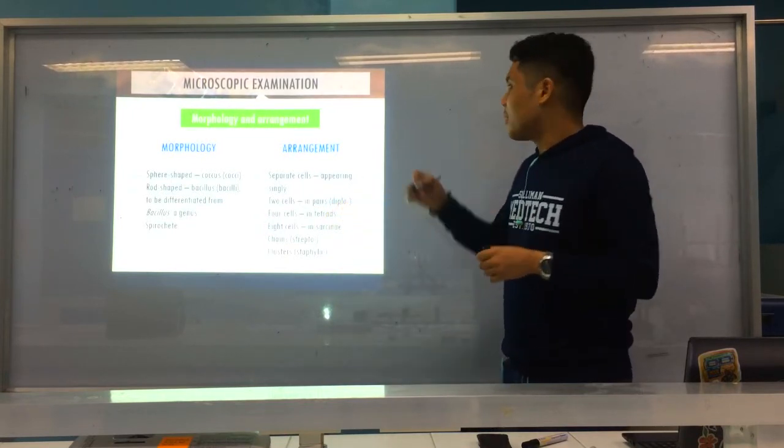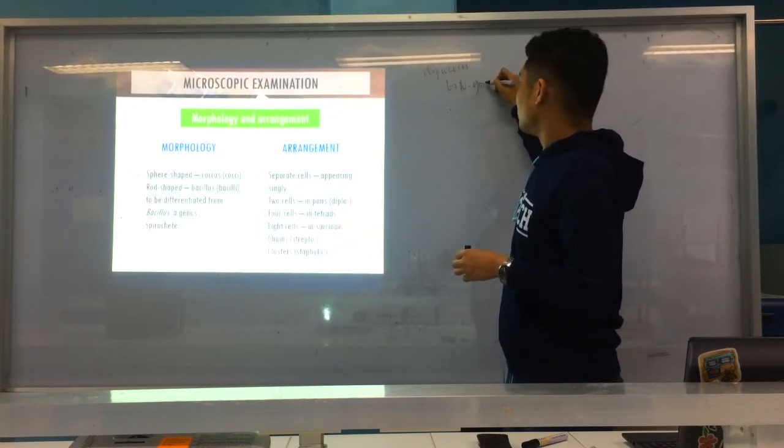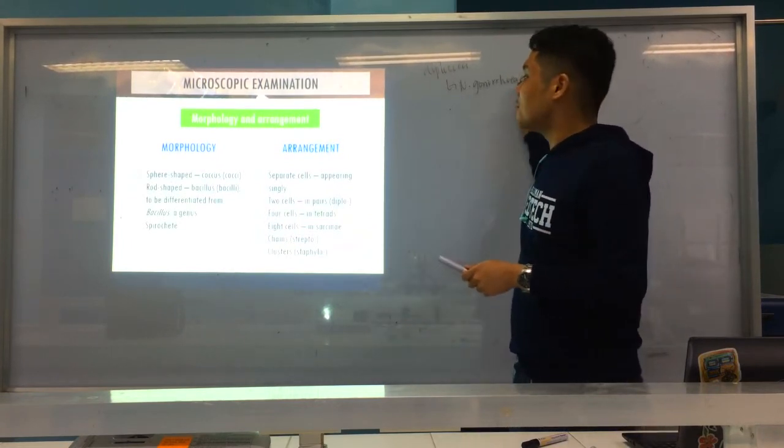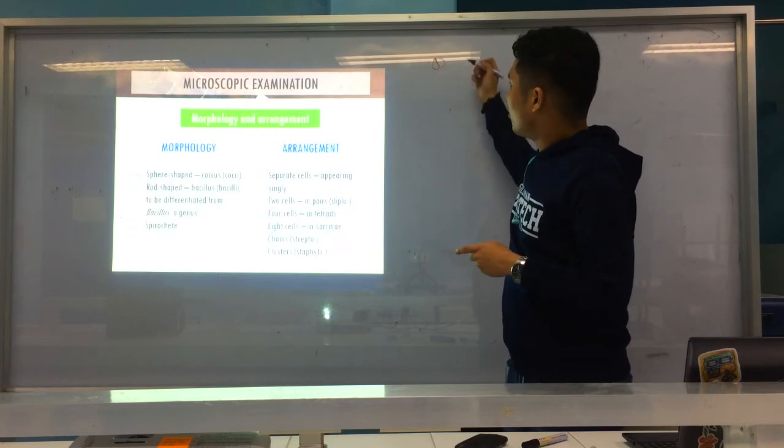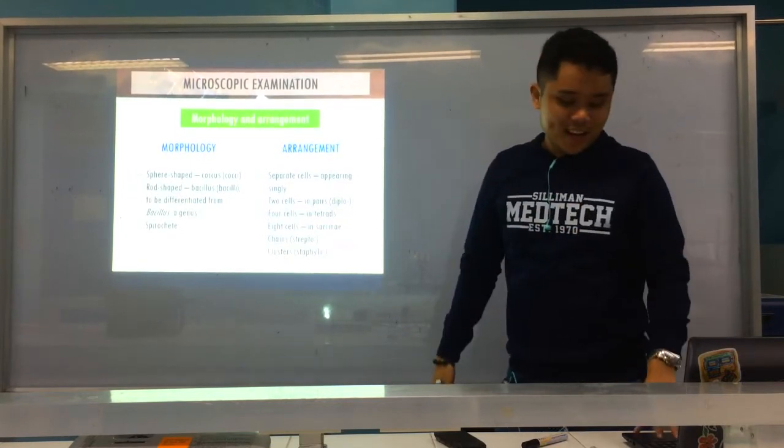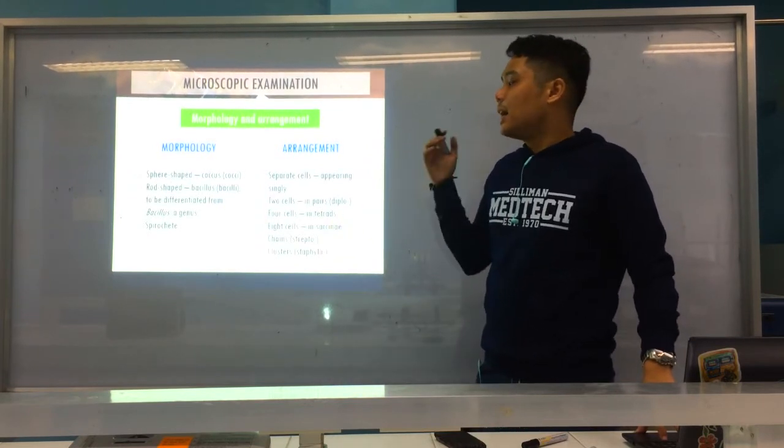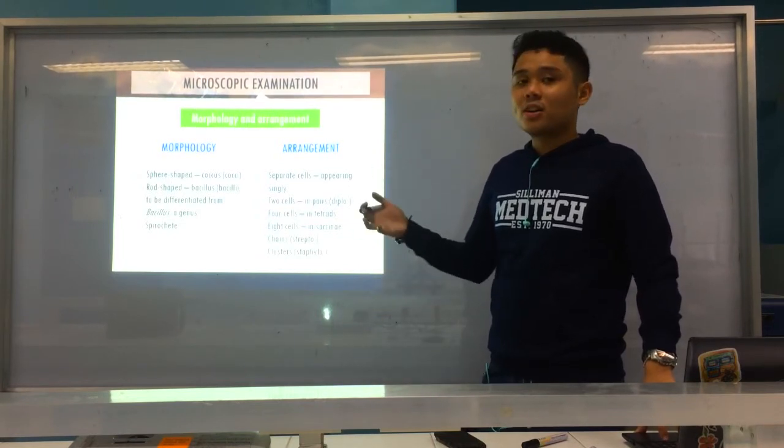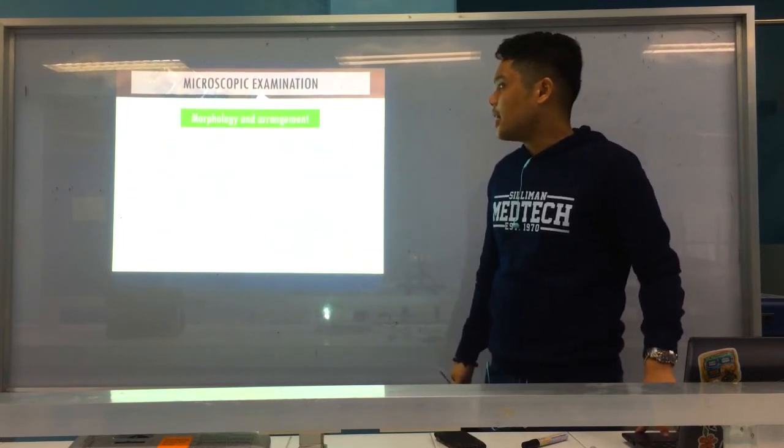Two cells, diplo. A very good example of a diplococcus, meaning pairs, you have your Neisseria gonorrhoeae. Usually, and also Neisseria species, they are in diplococci. Like pairs. They stick together. So please take note of these terms. Usually you report: gram-positive cocci appearing singly, gram-positive bacilli in chains, gram-positive, gram-negative cocci in pairs, or gram-negative diplococci. So that's how we report it.